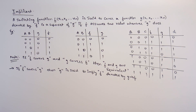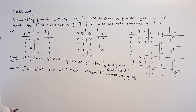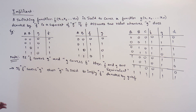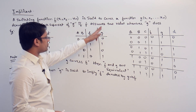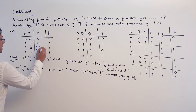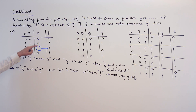A switching function F is set to cover a function G, denoted by F is a superset of G, if F assumes a true value whenever G does. For example, take this function G having values 0, 0, 1, 0 and function F having values 1, 1, 0, 1, 1, 1. F is a superset of G means whenever G is true, F should also be true. If G is false, we are not putting any condition on F.